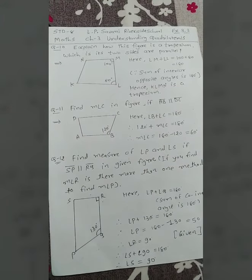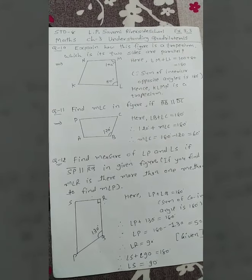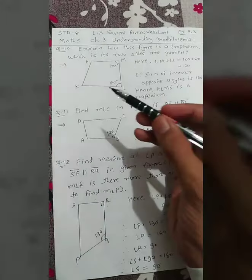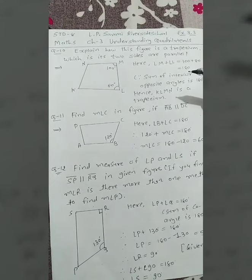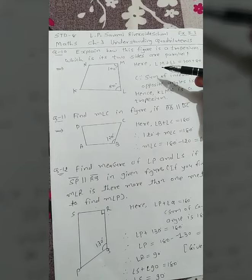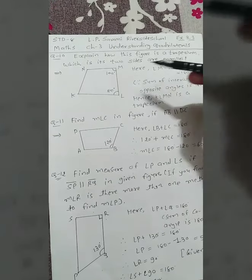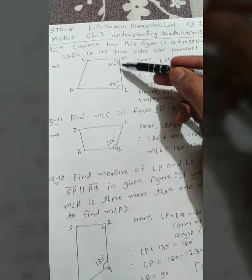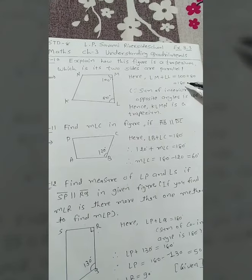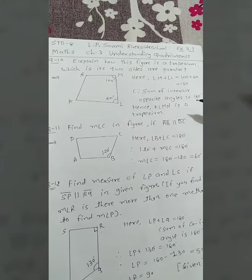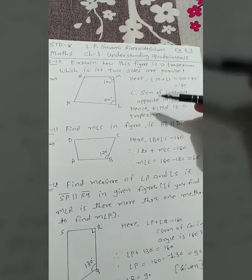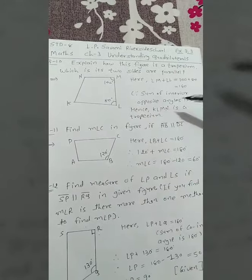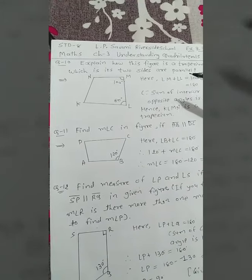Explain how this figure is a trapezium and which of its two sides are parallel. See here, KL and MN are the parallel sides of the trapezium. Angle M plus angle L, which is given in the question, gives 100 plus 80 equals 180. So the sum of interior co-interior angles is 180, hence KL is a trapezium.